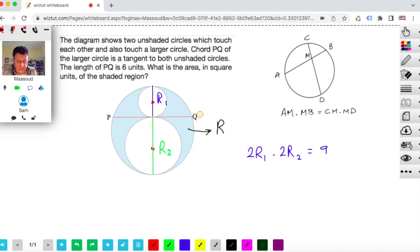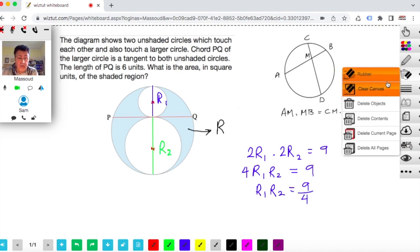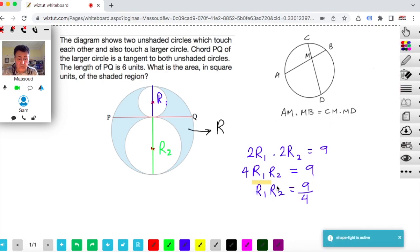So the first relationship that we find is that R1 multiplied by R2, so 4R1 multiplied by R2 would be equal to 9, which means R1 multiplied by R2 would be equal to 9 over 4. So I'm going to use that later on. Let's just put a little box over this. We know that we're going to use this one in a minute.